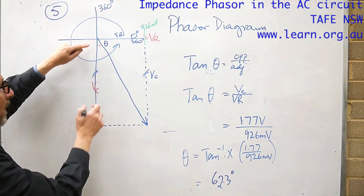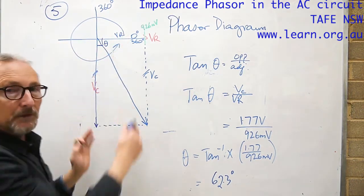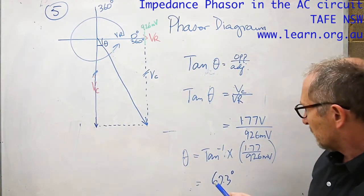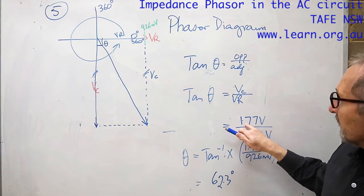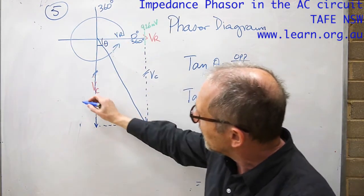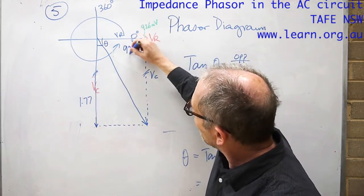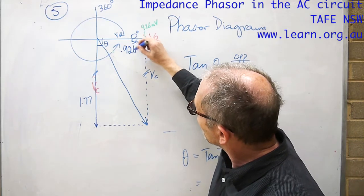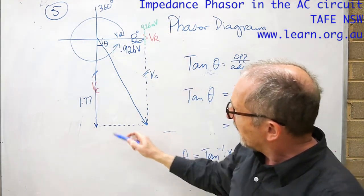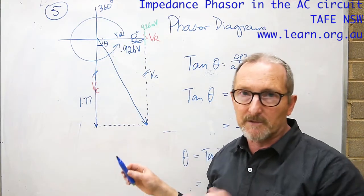The voltage across the capacitor is always 90 degrees out of phase with the voltage across the resistor. The voltage across the capacitor in this case was 1.77 volts, so 1.77 volts plotted down here. 0.926 of a volt plotted across here. That's all well and good to have VC and VR but it doesn't give us VS.